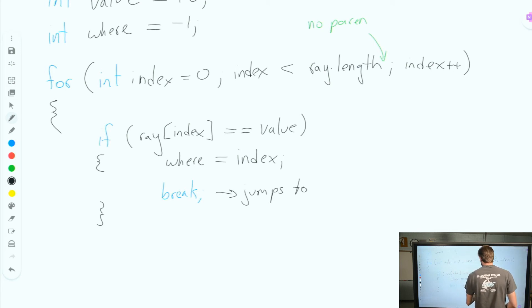I should say jumps to the end of the loop. So it jumps to the end of the loop. It stops looping. So it stops the loop. It jumps us out to the end of it, which is our curly brace down here.